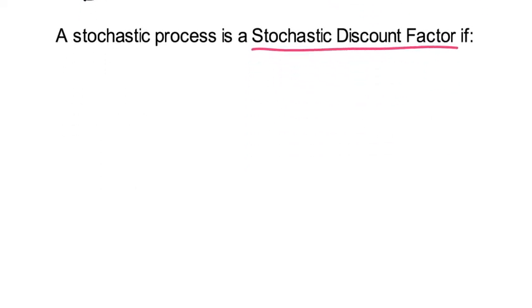So here are the three properties of the stochastic discount factor. First, M0 is 1.